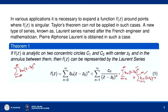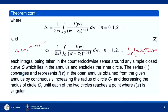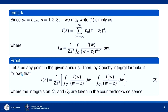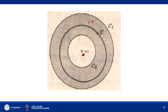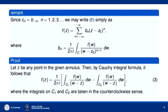So f(z) can be expressed as Σ(n=-∞ to ∞) b_n (z - z0)^n, where b_n = (1/2πi) ∮_C f(w) / (w - z0)^(n+1) dw. That is the alternate form of the Laurent series. Now let us take z to be any point in the given annulus, then by the Cauchy integral formula...